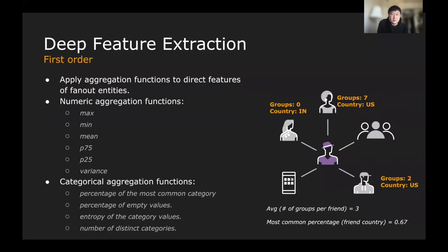Let's start with the deep feature extraction. For each of the Facebook users, we apply the first degree of fanout to take a look at of his or her friends and devices and the groups they're in, the pages they're posted to, and then apply the aggregation functions. For example, the numerical aggregation functions such as max, min, and mean, and the categorical aggregation functions such as what is the percentage of the empty values, what is the entropy of the categorical values. By applying those standard aggregation functions, we achieve those aggregated features.